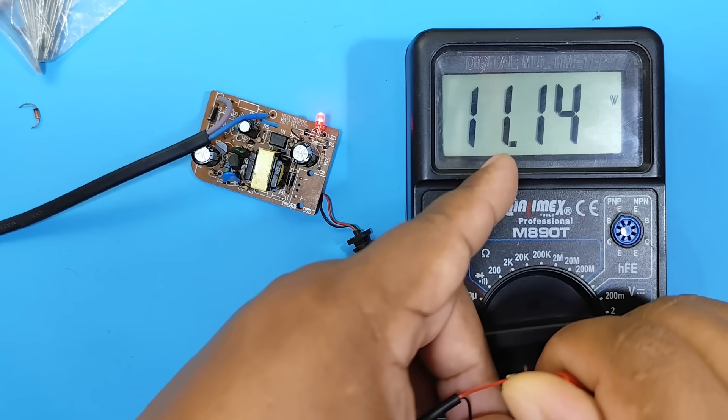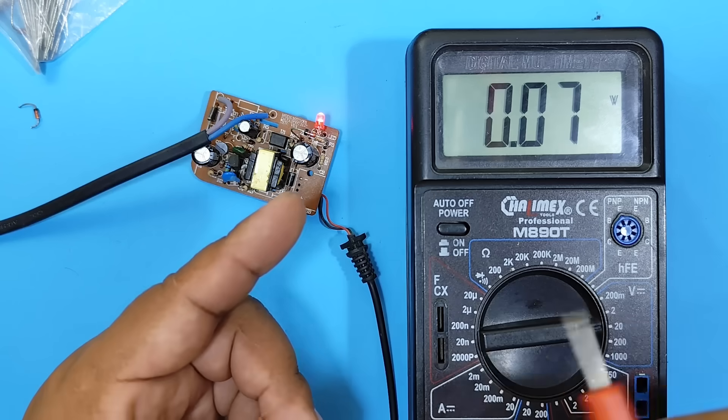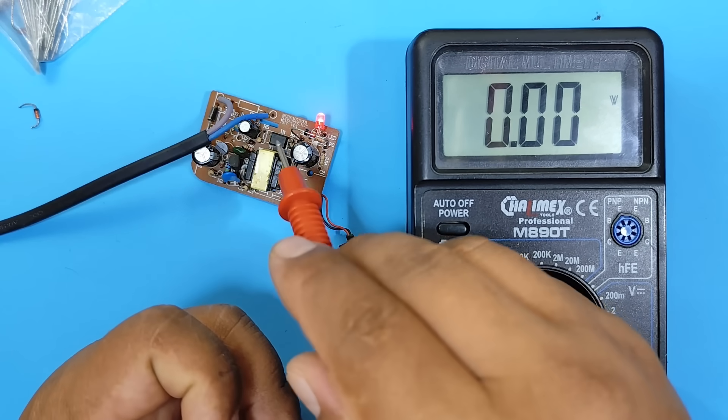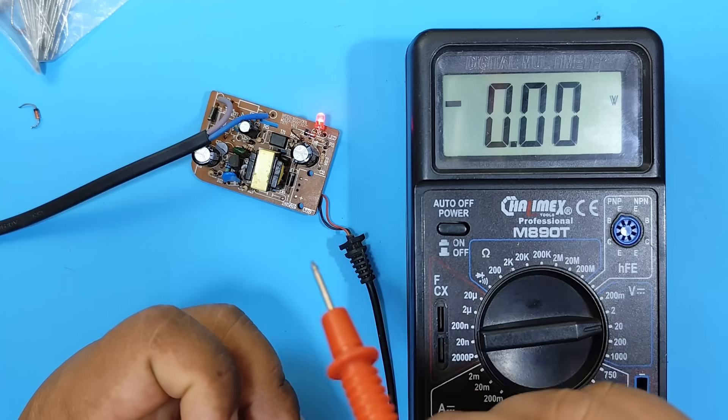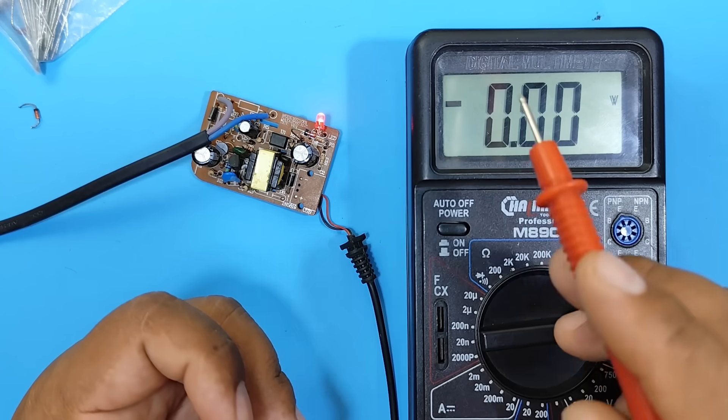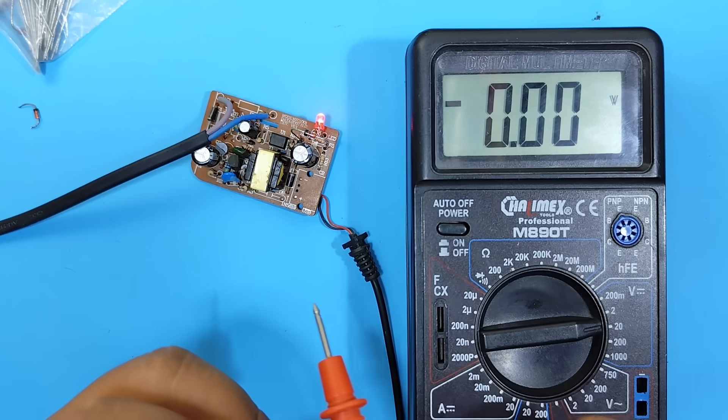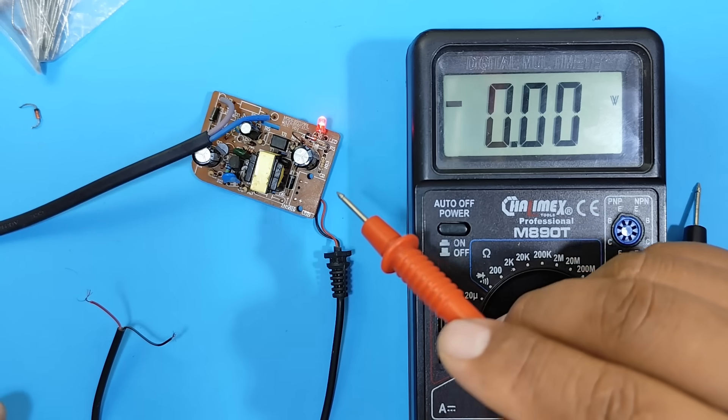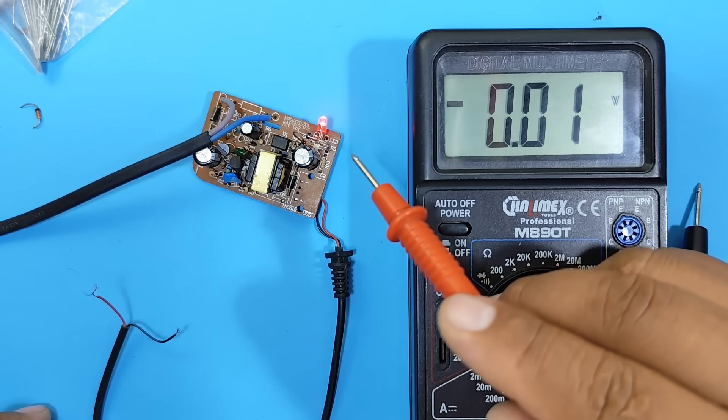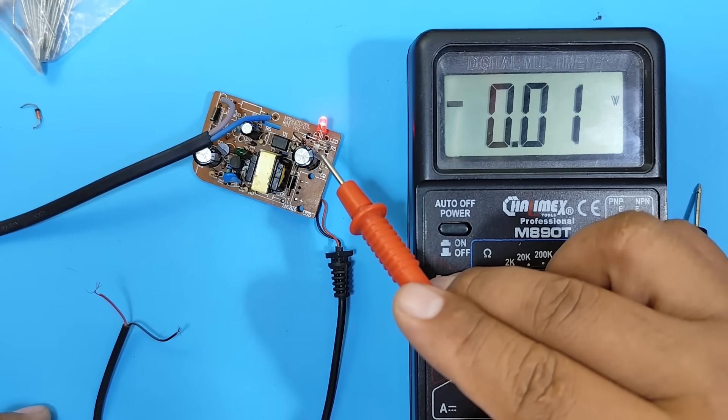The reason we have 11 volts is because not only the Zener diode is working, but also the LED in the optocoupler. Therefore, it gives us 11 volts of output. This way, you can alter the output voltage by changing the Zener diode in your charger.